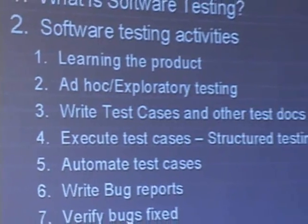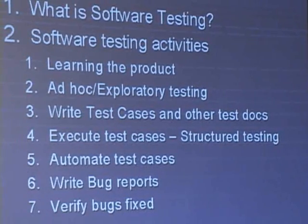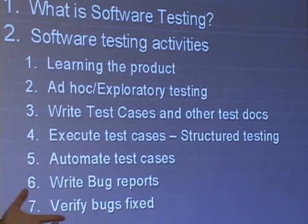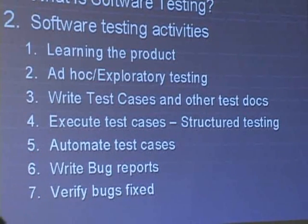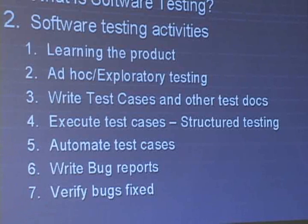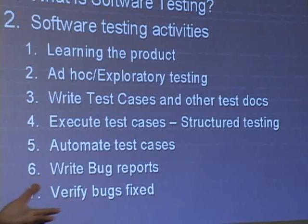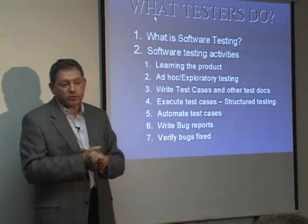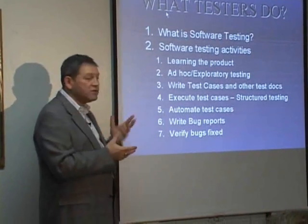You write test cases: do this, expect that. We document that knowledge, which is important because when someone new comes, they don't have to learn the software again. When we have test cases, we can execute them — we call it structured testing, where you just follow the procedure. We can also automate test cases. Whatever we do — learn, do ad hoc testing, exploratory testing, write test cases, automate, execute — we find problems. As soon as we find a problem, we report it in the form of a bug report, submitted to bug tracking software. When a developer says they fixed the problem, you go and make sure it is fixed.